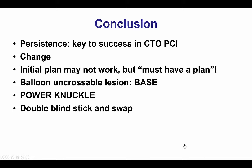This case provides several learnings. The first is that persistence is key for complex CTO-PCI — if things don't work with the initially selected approach, then changing is the way to go. Nevertheless, one must have an initial plan and then modify it according to progress. When we have a balloon-uncrossable lesion or a lesion with an ambiguous cap, the BASE technique and the power knuckle are very important to create a new proximal cap and cross these lesions, followed by re-entry, which is quite frequently done with the double-blind Stick and Swap technique. Thank you.